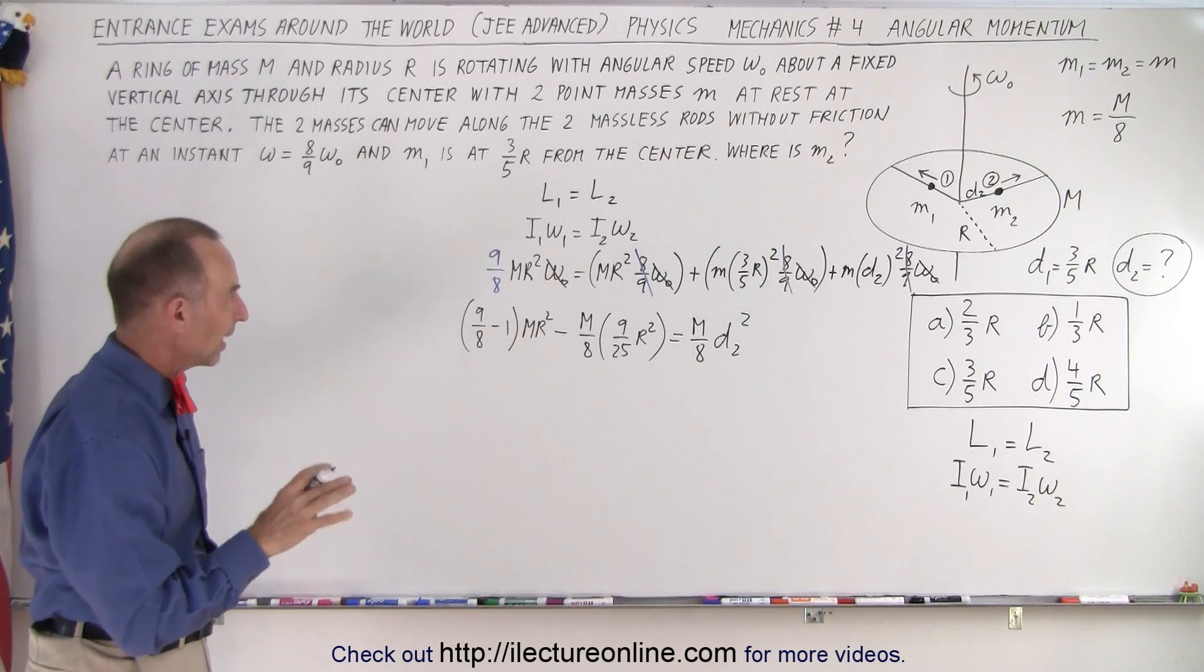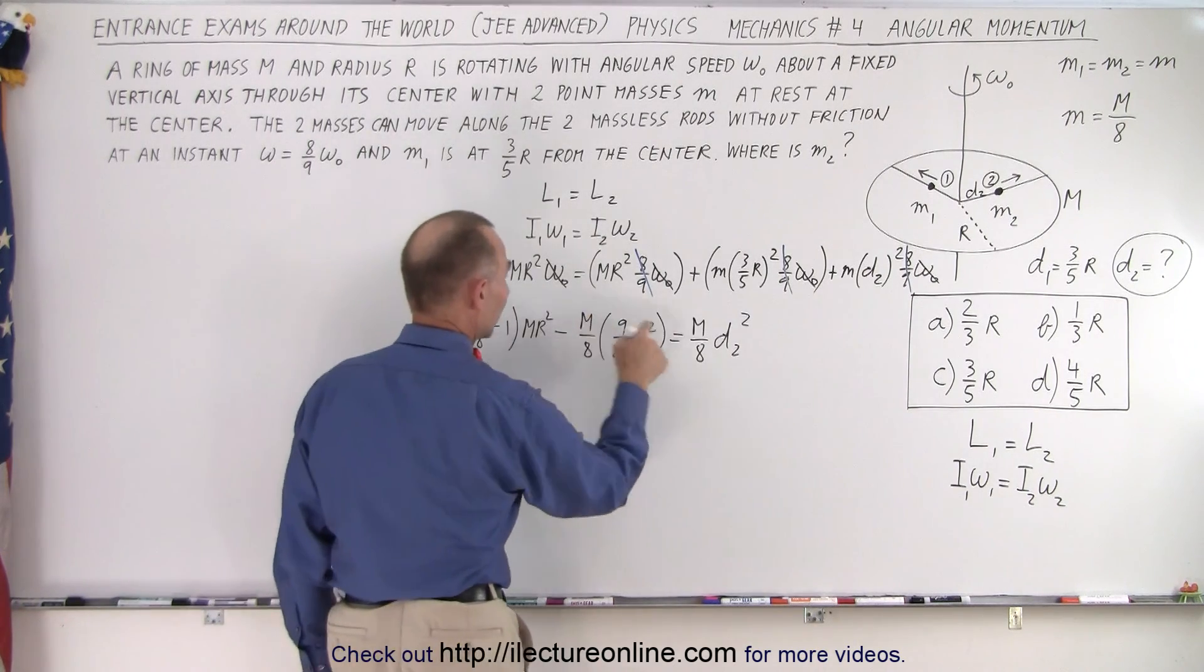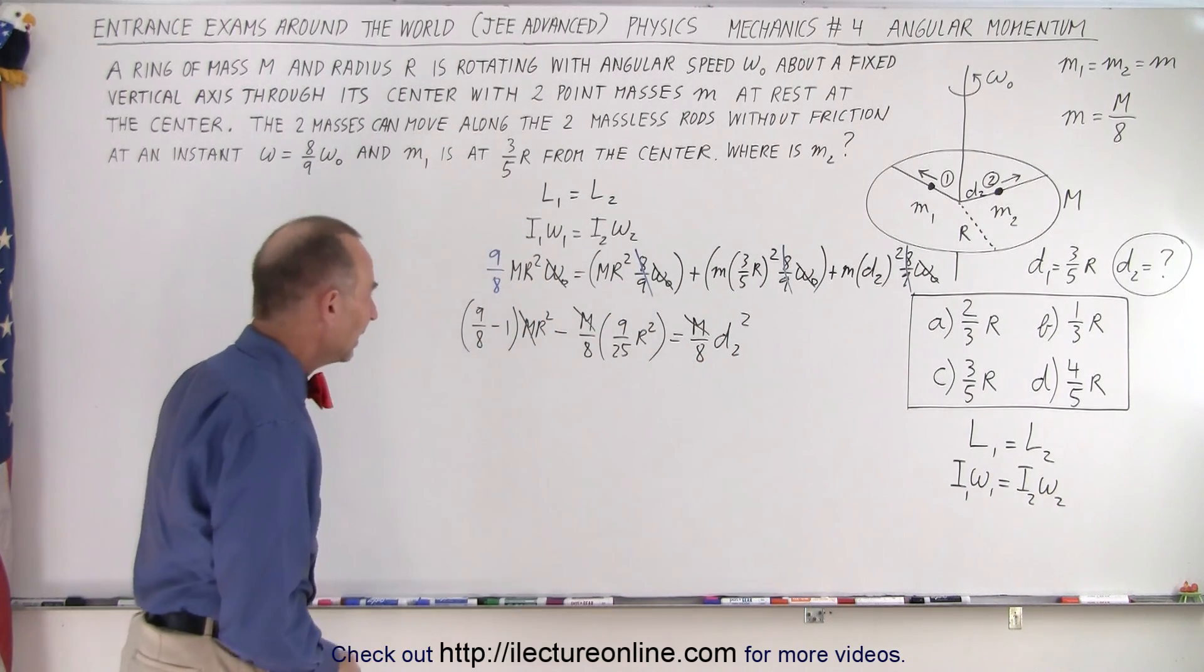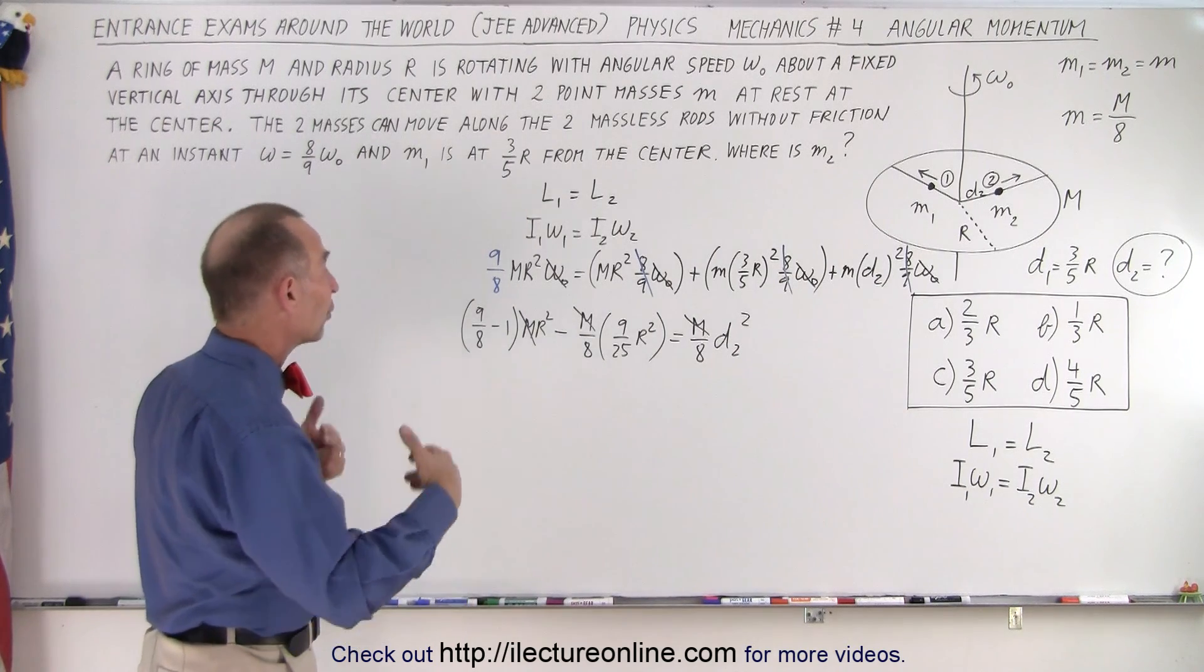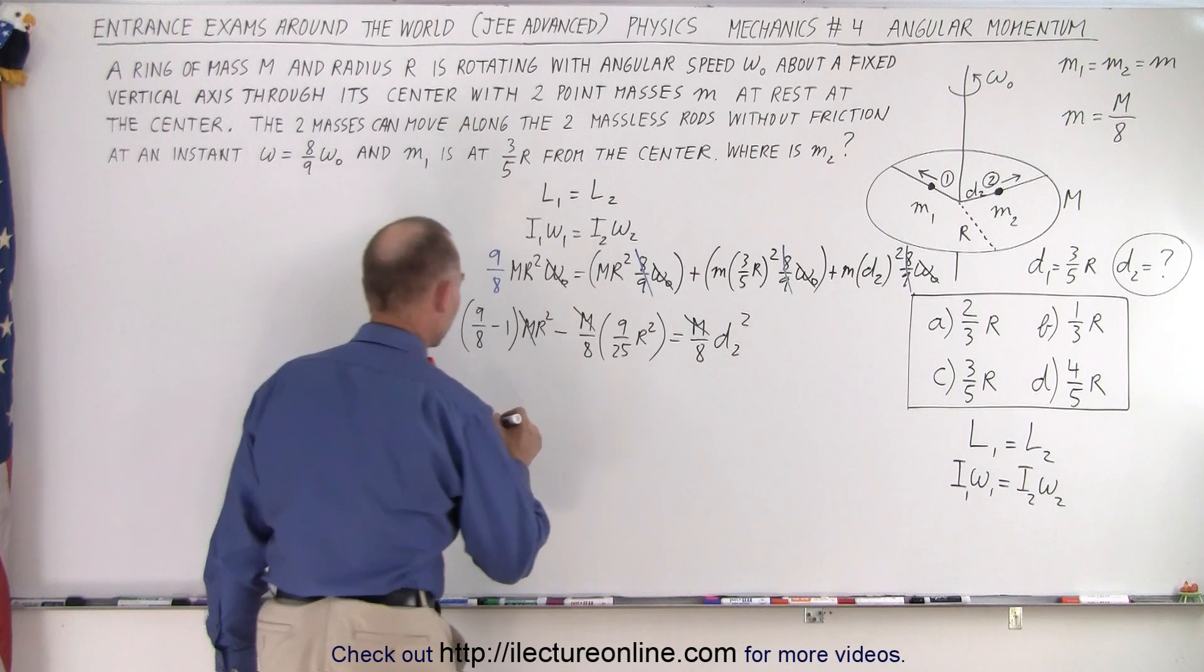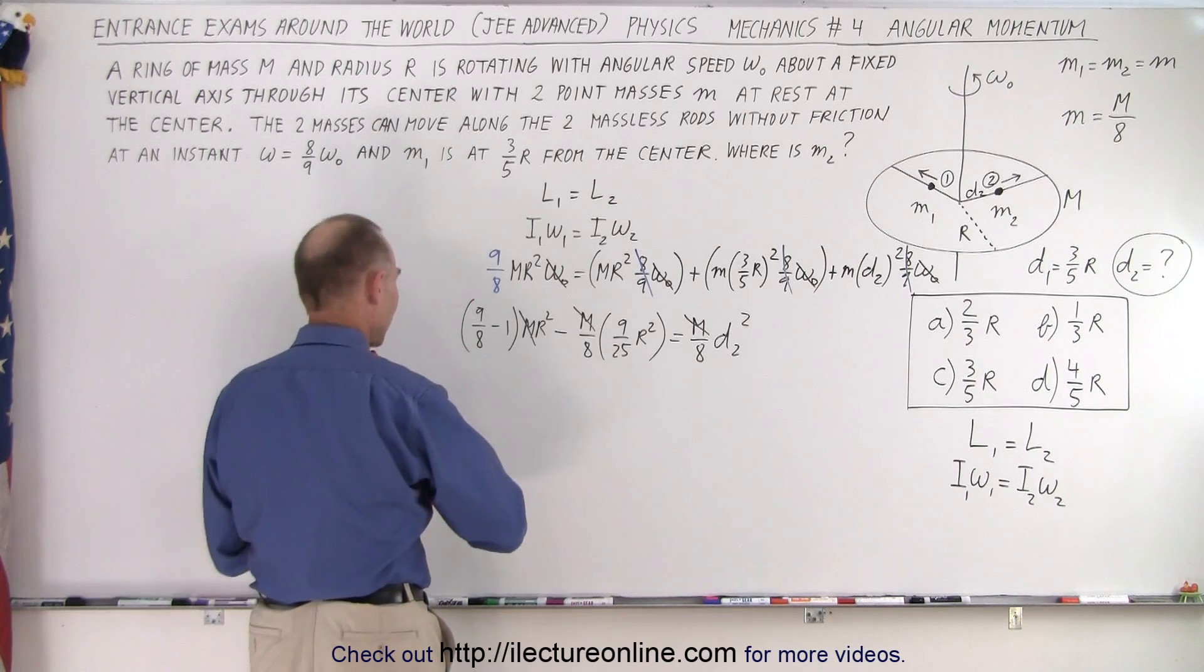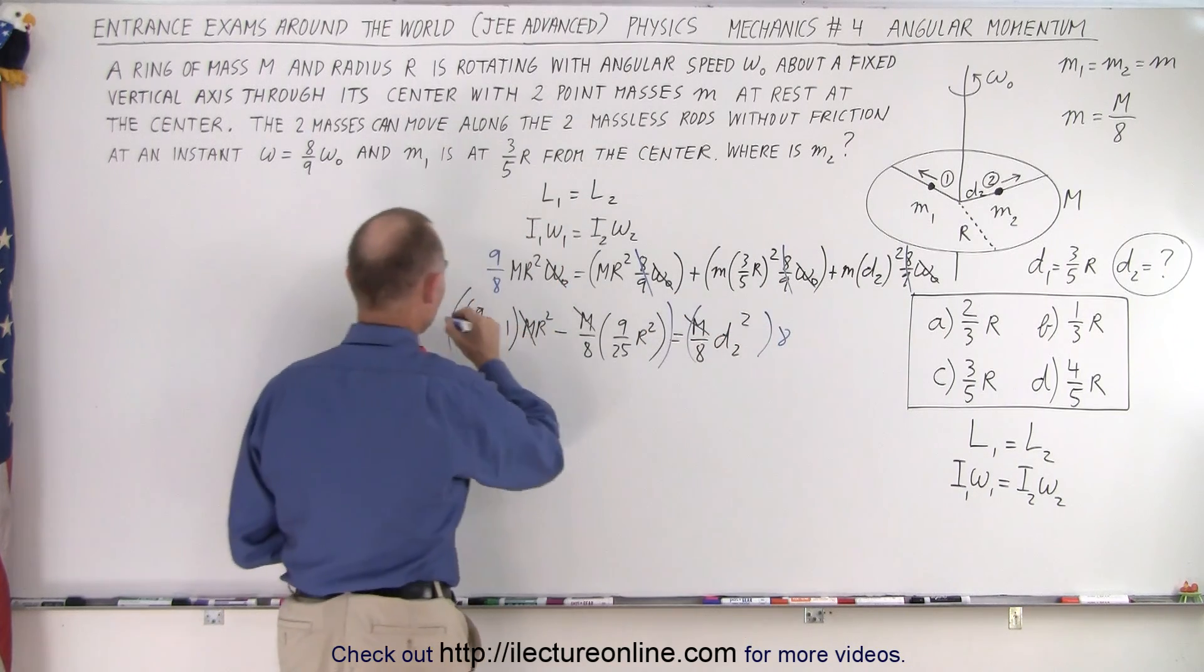Now that I've written it like that, notice I can get rid of all the m's because every term has an m in it, so the m's cancel out. And then, I can probably make things easier if I multiply both sides by eight. So I'm going to multiply the left side by eight and the right side by eight.